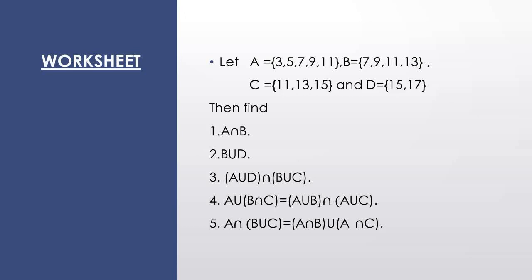Next, brackets का क्या मतलब है — पहले आप A union D निकालेंगे, फिर आप B union C निकालेंगे, फिर जो दोनों का result आएगा उसका intersection. A union D आएगा {3, 5, 7, 9, 11, 15, 17} and B union C equals {7, 9, 11, 13, 15}. अब आपने इन दोनों sets के बीच का intersection निकालना है. For parts 4 and 5, पहले आप B intersection C निकालेंगे: B intersection C = {11, 13}. फिर उसका आप A के साथ union लेंगे: {3, 5, 7, 9, 11, 13}.